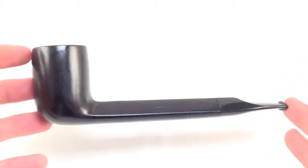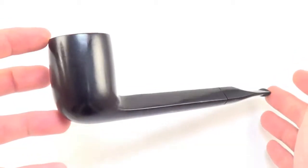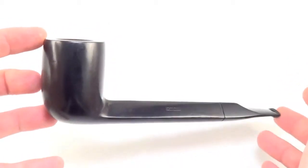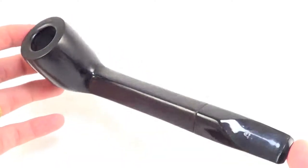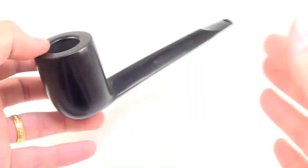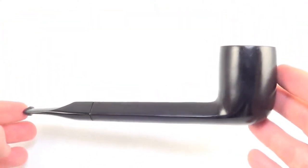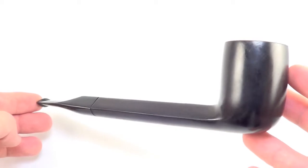Here is an amazing pipe from Lorenzo. This is a really long grain Canadian. You can see how long that shank is there. It's almost eight inches overall.